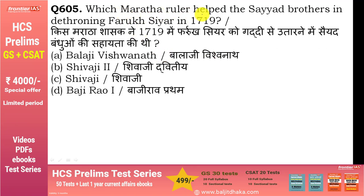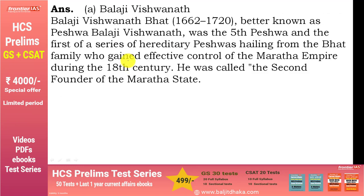Which Maratha ruler helped the Syed brothers in dethroning Farrukhsiyar in 1719? Answer है Balaji Vishwanath। ये Peshwa Balaji Vishwanath हैं। ये पांचवें Peshwa थे और hereditary Peshwas की lineage में पहले थे। इनको 'the second founder of the Maratha state' के नाम से भी जाना जाता है।